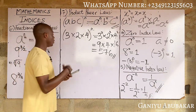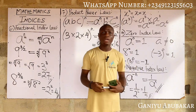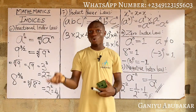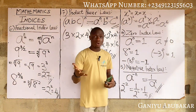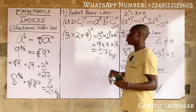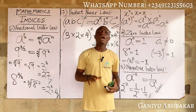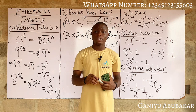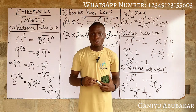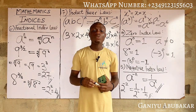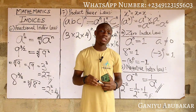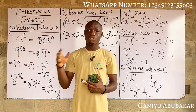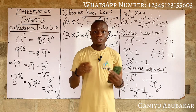So these are the seven basic laws of indices: the Multiplication Law, Division Law, Power Law, Zero Index Law, Negative Index Law, Fractional Index Law, and Product Power Law. In the next class we'll look at how to apply all these laws in solving problems. If you found this class helpful, please like, comment, and subscribe. Follow us on TikTok, Instagram, and Facebook — the links are in the description. Thank you and welcome to Excellent Link Academy!